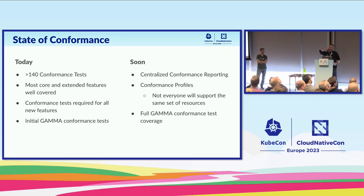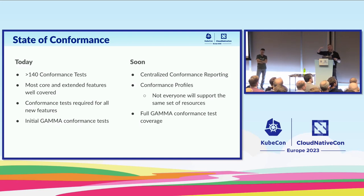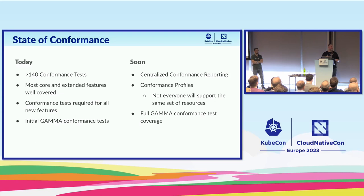As of today, we've got over 140 conformance tests. Most core and extended features for gateway class, gateway, and HTTP route are well covered. Conformance tests are required for all new features, and we have an initial GAMMA conformance test suite. Soon we want centralized conformance reporting and conformance profiles — rather than listing every feature you support, you'd just say 'I support HTTP' and that implies a defined set of features. We want shorthand labels like HTTP, TLS, layer four, layer seven — something simpler than a huge list of tests.